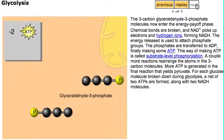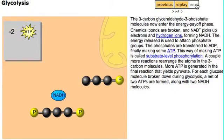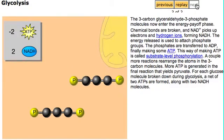The three-carbon glyceraldehyde phosphate molecules now enter the energy payoff phase. Chemical bonds are broken, and NAD+ picks up electrons and hydrogen ions, forming NADH. The energy released is used to attach phosphate groups.